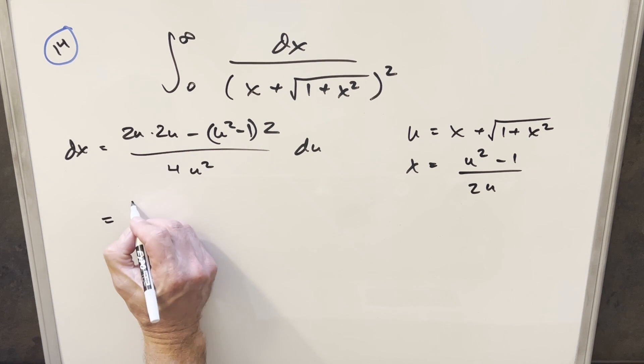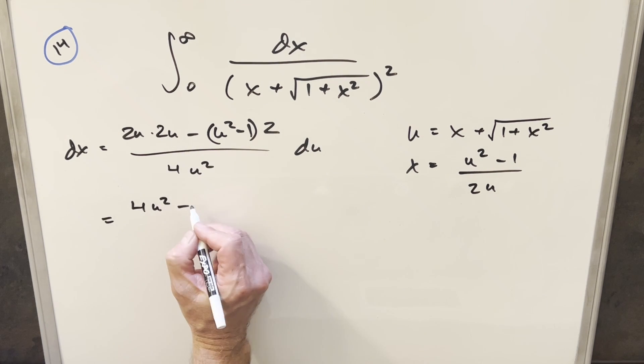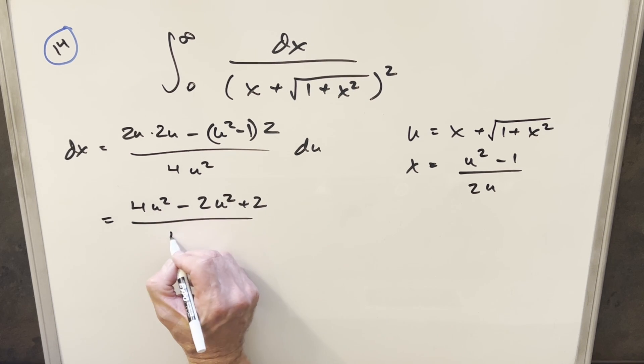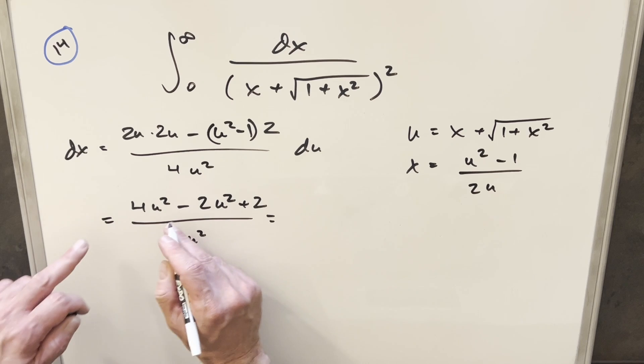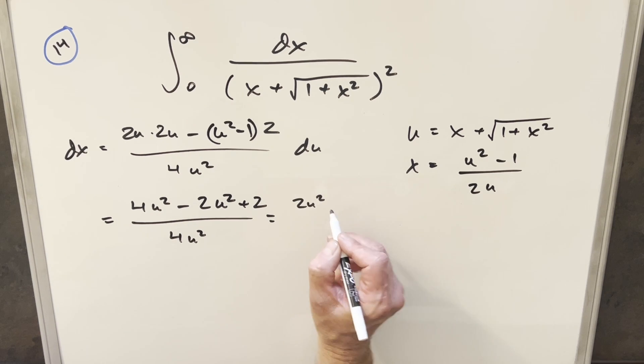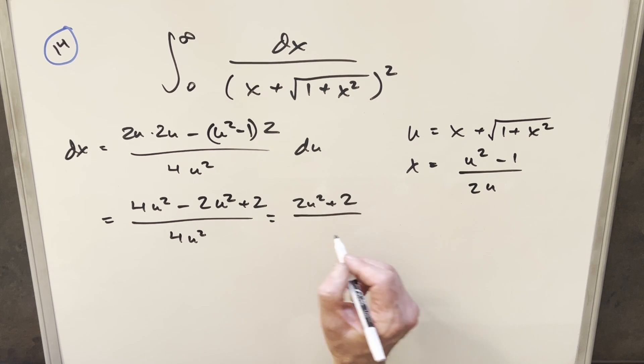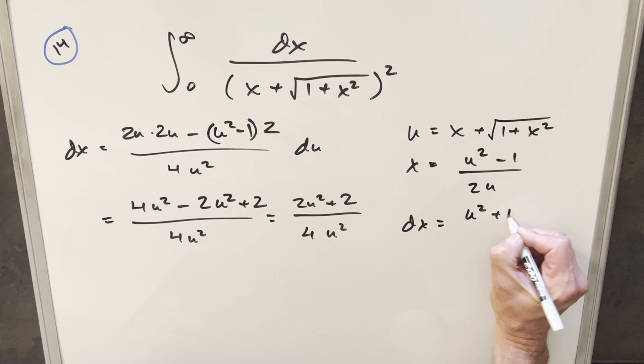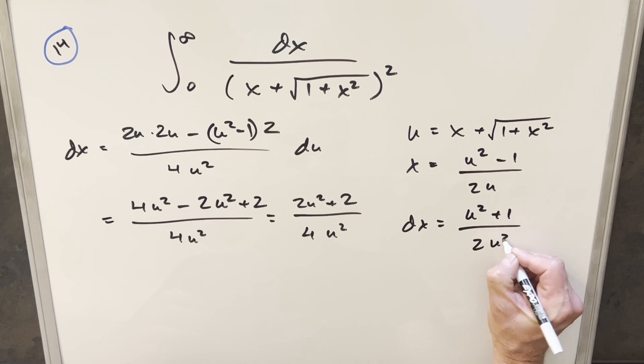Simplifying this numerator, we're going to get 4u squared minus, distributing the 2, we'll have minus 2u squared plus 2. And this is going to be all over 4u squared. But then simplifying this, we're going to get 2u squared plus 2 over 4u squared. Then I can just factor a 2 out of the numerator and denominator here. So for our dx value, we're going to have just u squared plus 1 over 2u squared du.